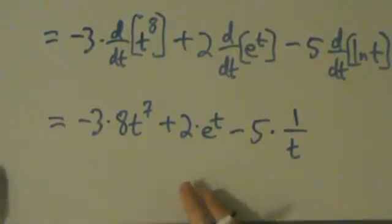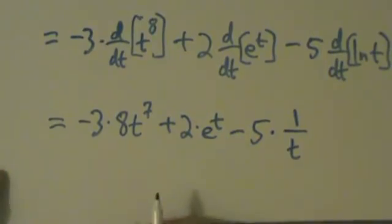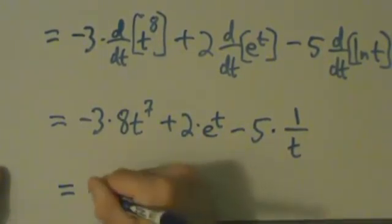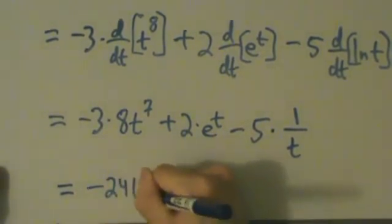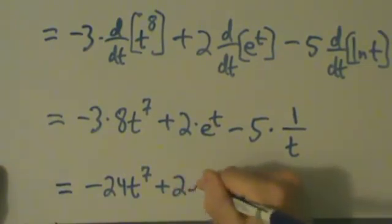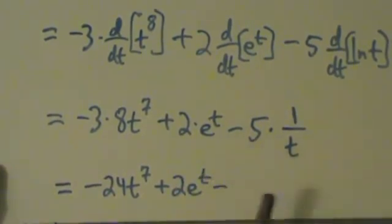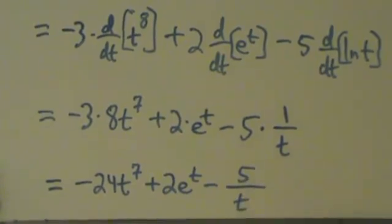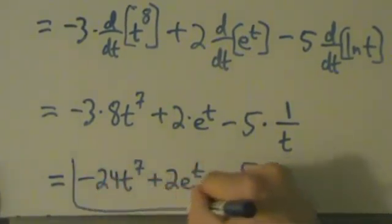So we don't really want to leave it just like this, but we can simplify it just a little bit, simplify or cleanup. So -3 times 8, that's -24. So we have -24t^7 + 2e^t. And then we can write this as -5 over t. So that's our answer for example 3.